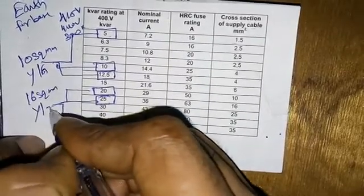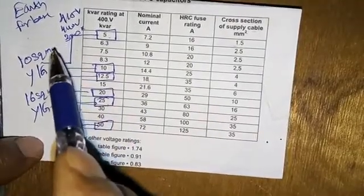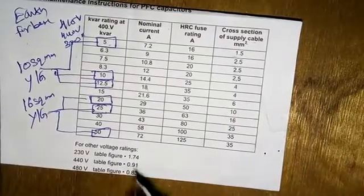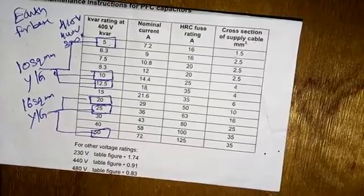These are the basic things to choose the wire size based on the kVAR and to choose HRC fuse based on the kVAR. This is a very simple table. If you have any doubts, please comment here. Thank you for watching and don't forget to subscribe to the channel. Thank you.